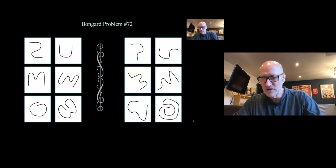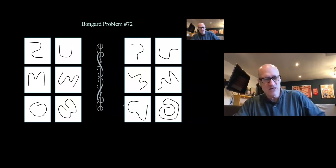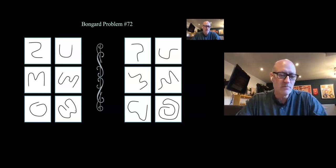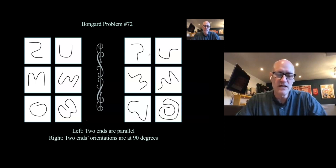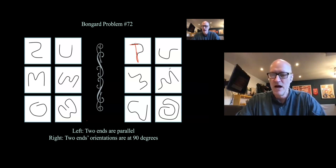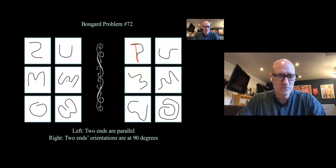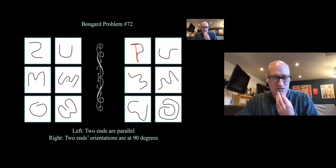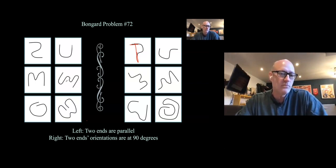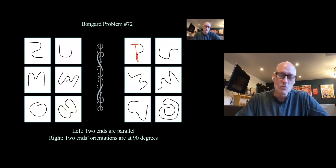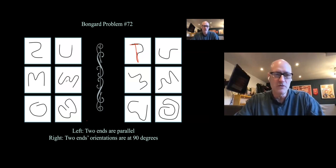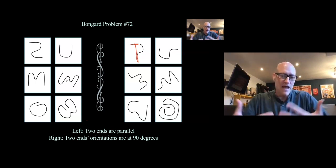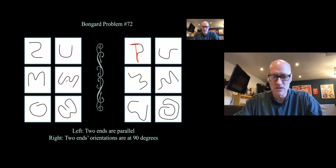Felix got exactly the right answer: on the left side, the ends are parallel to each other, whereas on the right side, the end orientations are 90 degrees to each other. Felix gets the point for being first, but Hussein is also correct. This is quite difficult. I'd maintain that when Felix was doing this problem, he wasn't originally thinking about the relative orientation of the two ends — that description emerges as a process of noticing different things in the images.